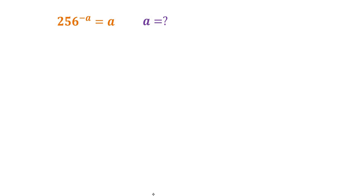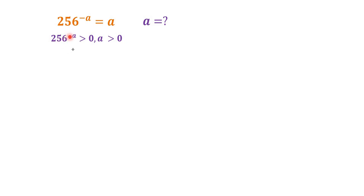In this video we are going to solve the equation: 256 to the power of negative a is equal to a. What is a? First of all, we would like to look at the range of a. Since 256 to the power of negative a is always positive, a must be positive.